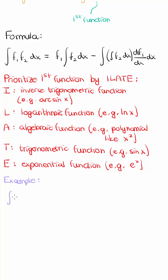Quick example, integral of x cosine x. x is an algebraic function, cosine x is a trig function, a comes before t in our priority acronym, so I should pick x as my first function and cosine x as my second function. When I apply the integration by parts formula this is what I get.